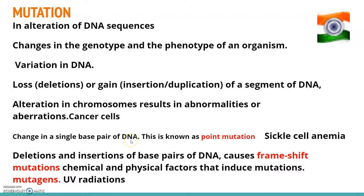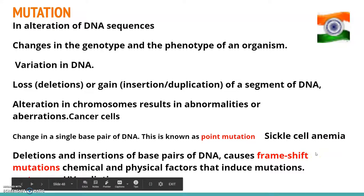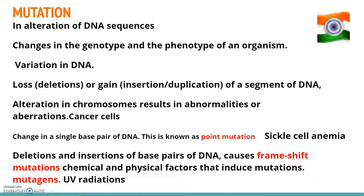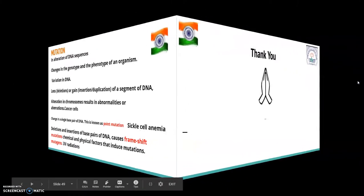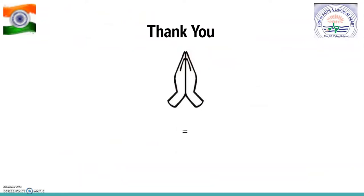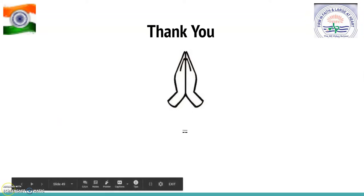Mutations also arise due to a change in a single base pair of DNA, and this is known as point mutation. Sickle cell anemia is the classical example of point mutation. Deletions and insertions of base pairs in DNA also cause frame shift mutations, which will be covered in the next chapter. There are many chemical and physical factors responsible for causing mutations; these are called mutagens. Ultraviolet radiation is one example of a mutagen that can cause mutations in organisms.